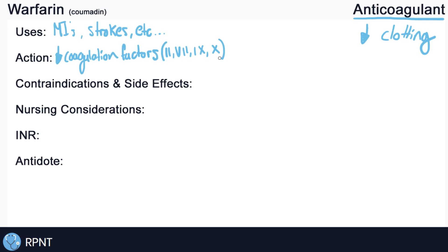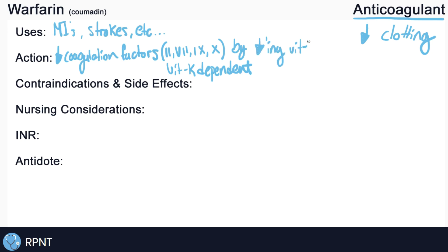Warfarin inhibits these coagulation factors because these are what we call the vitamin K dependent clotting factors. The way that warfarin works is it decreases these coagulation factors by decreasing vitamin K synthesis. If we don't have these vitamin K dependent clotting factors, then overall we're going to see less clotting in the body, which is exactly what we want with an anticoagulant.